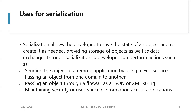The uses of serialization include: it allows the developer to save the state of an object and recreate it as needed, providing storage of objects as well as data exchange. Through serialization a developer can send an object to a remote application using a web service, pass an object from one domain to another, pass an object through a firewall as a JSON or XML string, and maintain security or user-specific information across applications.